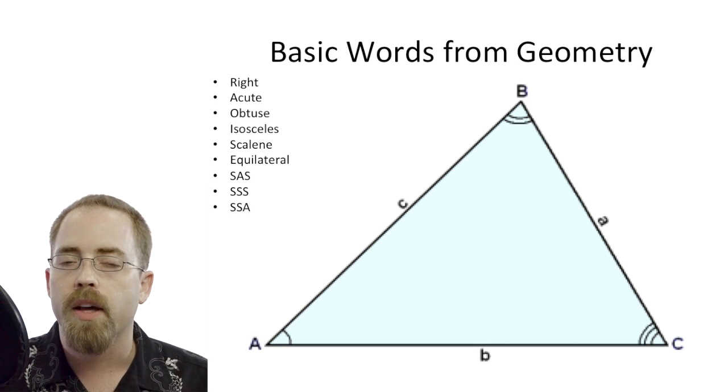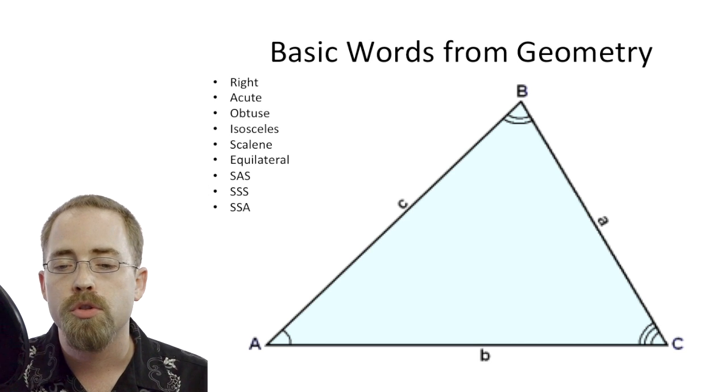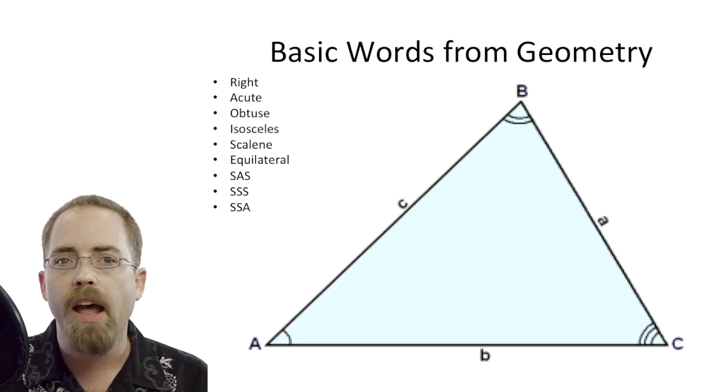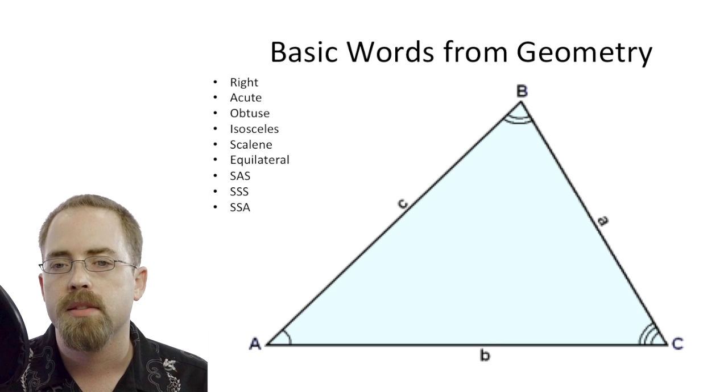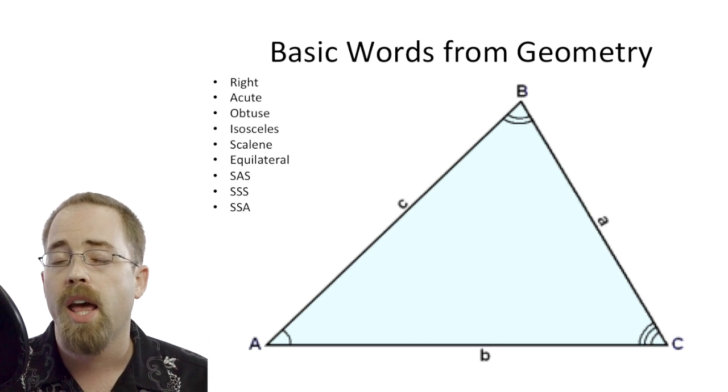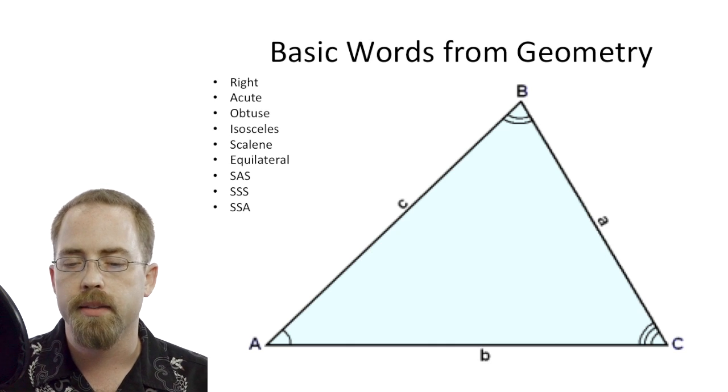I could give you side side angle. Now, this is not the same as side angle side. This means I've given you two sides next to each other and then a third angle not in between them. So like if I gave you side a and side c and then either angle A or angle C on this triangle, then you would be getting side side angle.